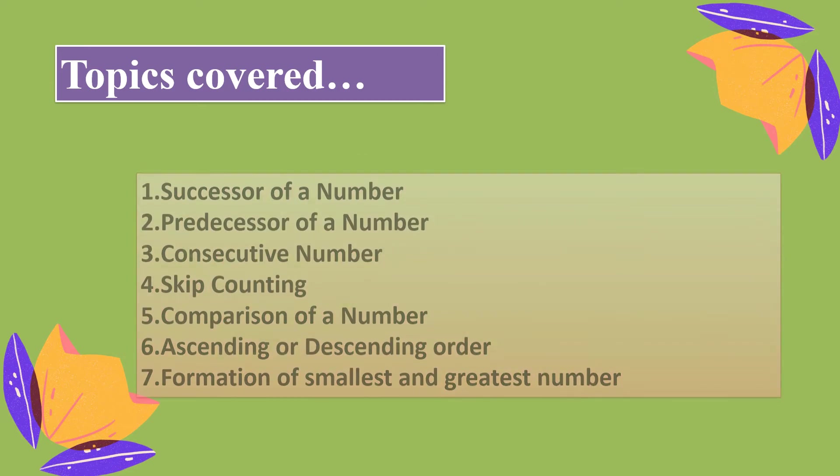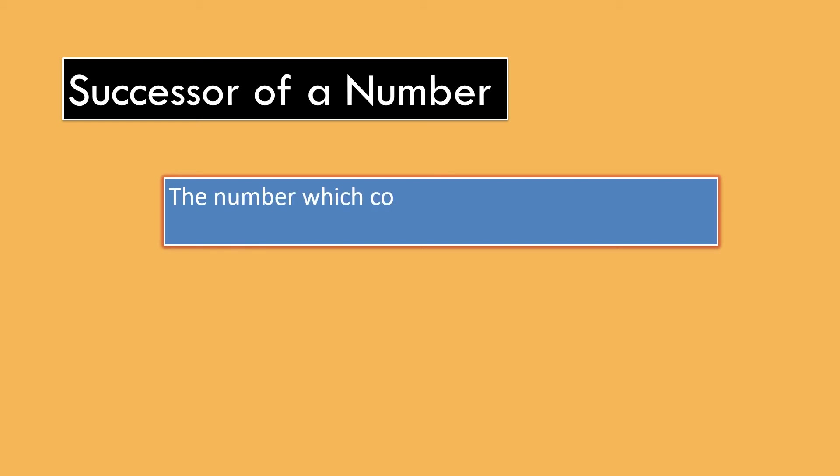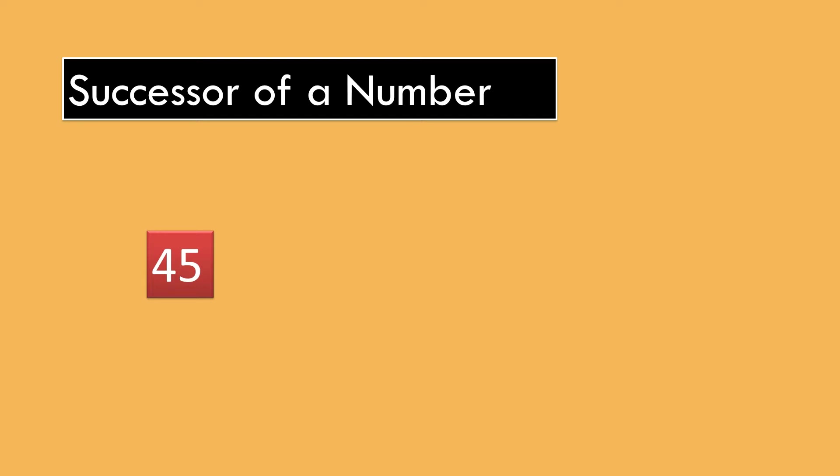Let's begin with our first topic, Successor of a Number. The number which comes just after a given number is called its successor, which means when we add 1 to a number, we get its successor. For example, when we add 1 to 45, we get 46. So, 46 is the successor of 45.